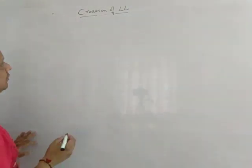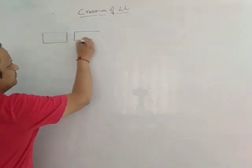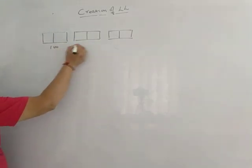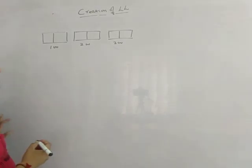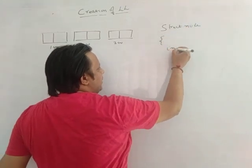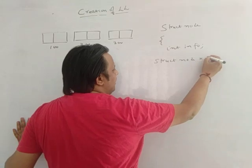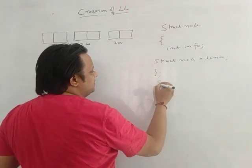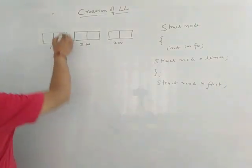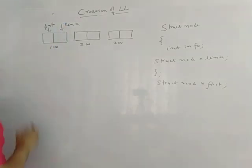Let's start with the creation of a single linked list. Suppose this is the linked list I am going to create. The addresses are 100, 200, and 300. The structure of a single linked list is: struct node contains the info (data) part, and a pointer struct node star link which points to the next node. There is also a variable that always contains the address of the first node.